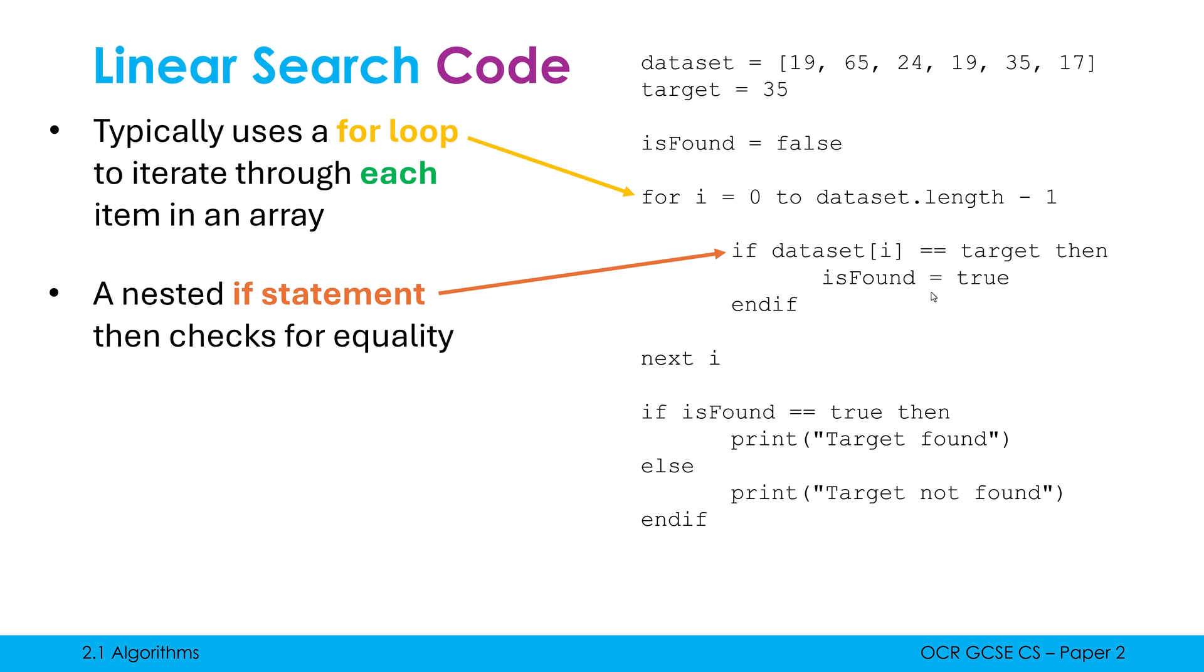And then my implementation here, I've decided to use a Boolean variable to keep track of whether it's been found or not. Because at the end, I want to print out whether it's found or not found. I only wanted to print this out once, which is why I didn't put it in the for loop. If I put these in the for loop, it might print it multiple times, which isn't quite what I want.